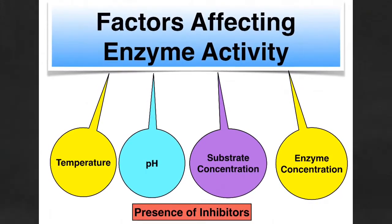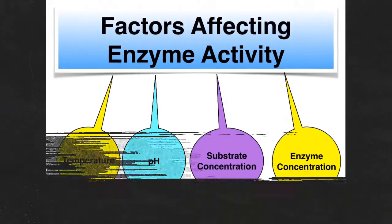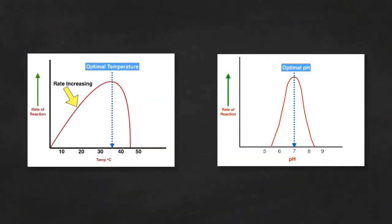So we had temperature, pH, substrate concentration, enzyme concentration and the presence of inhibitors. Make sure that you can discuss what's happening in the enzyme temperature graph and the enzyme pH graph. Make sure you can draw them and label them.